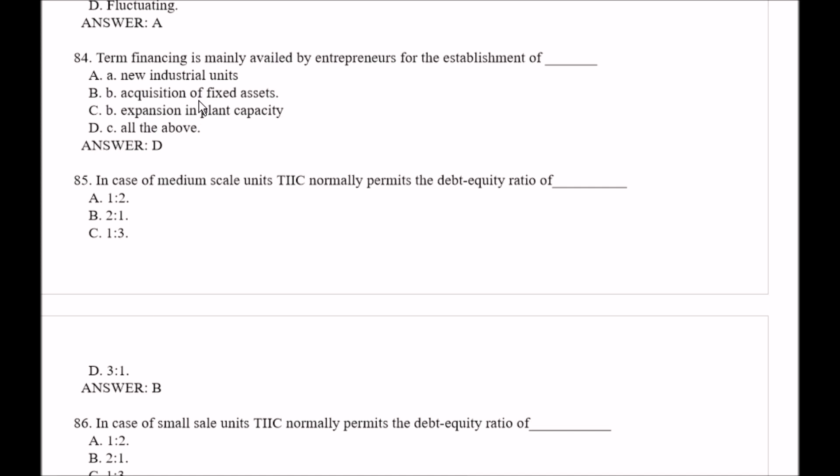Question number 84: Term financing is mainly available for entrepreneurs for the establishment of — Option A, new industrial unit; Option B, acquisition of big assets; Option C, expanding plant capacity; Option D, all of the above. The right answer is Option D, all of the above.